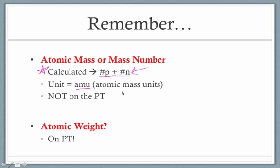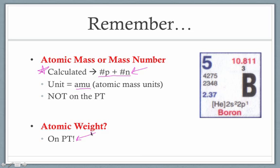In contrast, today we're talking about atomic weight. This is the data we find on the periodic table. Taking the element boron as a quick example, the number shown at the top is our average atomic weight — that's the information we'll be working with today, and we need to distinguish it from atomic mass.